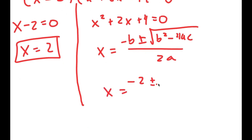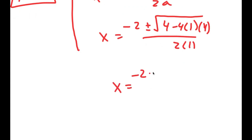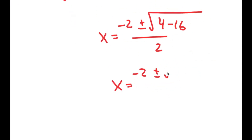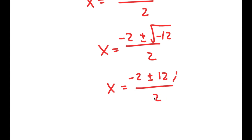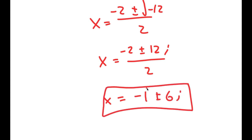So I get negative 2 plus or minus the square root of 4 minus 4 times 1 times 4, all over 2 times 1. This turns into negative 2 plus or minus the square root of 4 minus 16 over 2, which is equal to negative 2 plus or minus the square root of negative 12 over 2, which is equal to negative 2 plus or minus 12i over 2, which is equal to negative 1 plus or minus 6i. So these are the two more solutions to this equation.